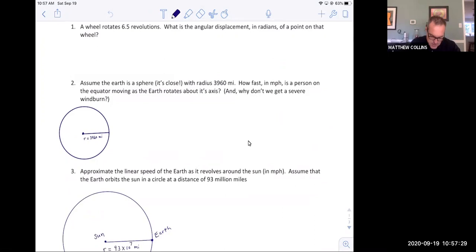So number two says, assume the earth is a sphere, in other words it's a basketball with a radius of 3960 miles. How fast is a person on the equator moving as the earth rotates about its axis?